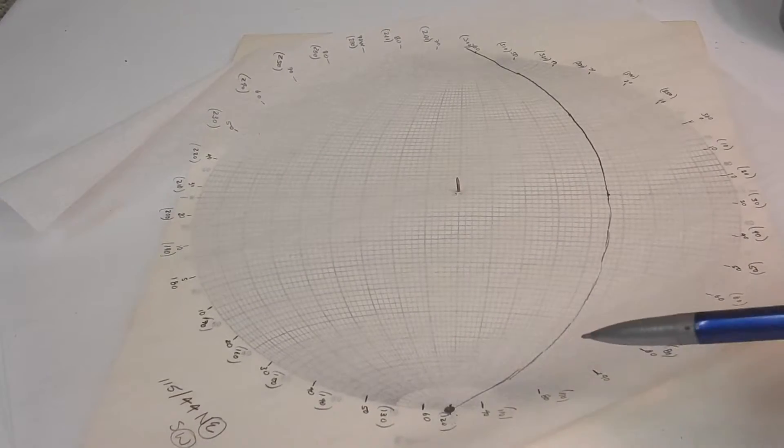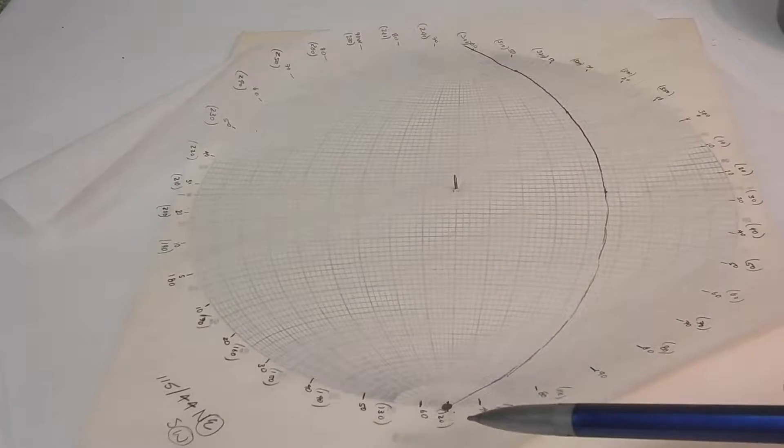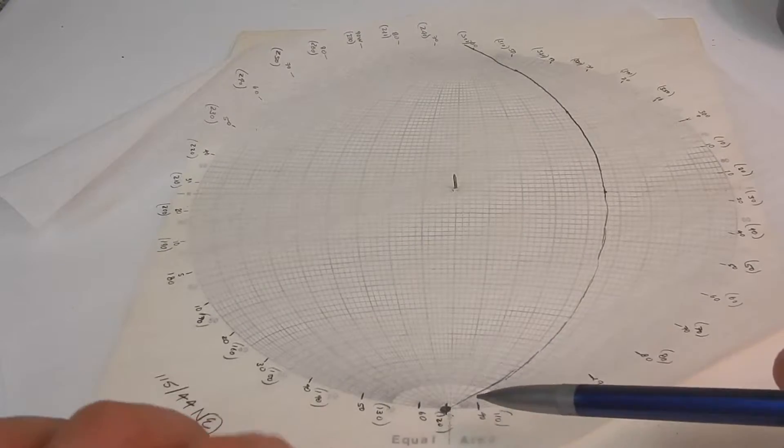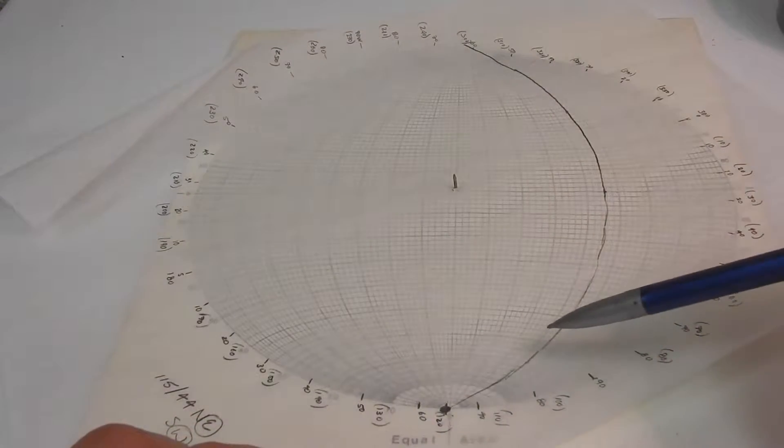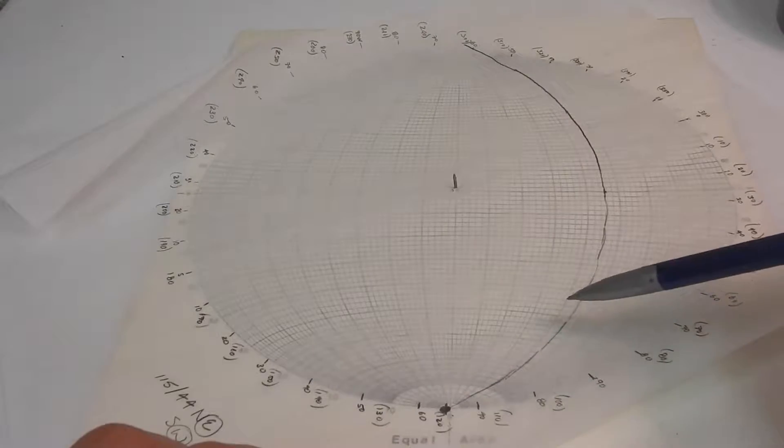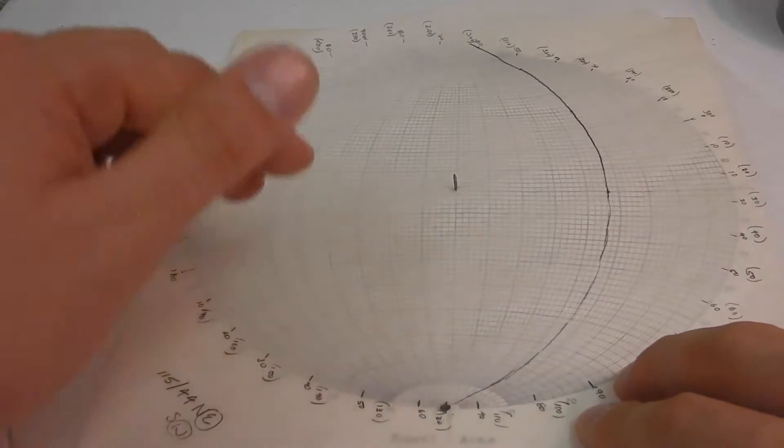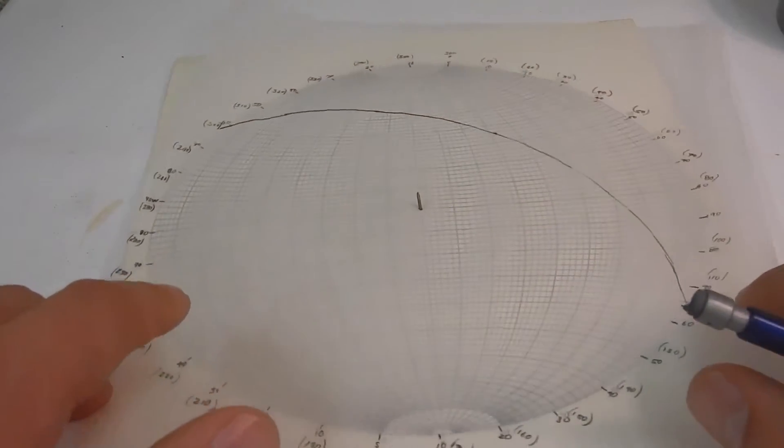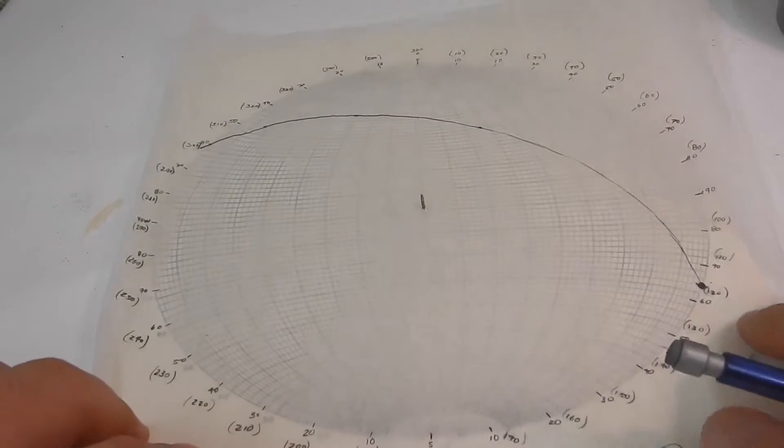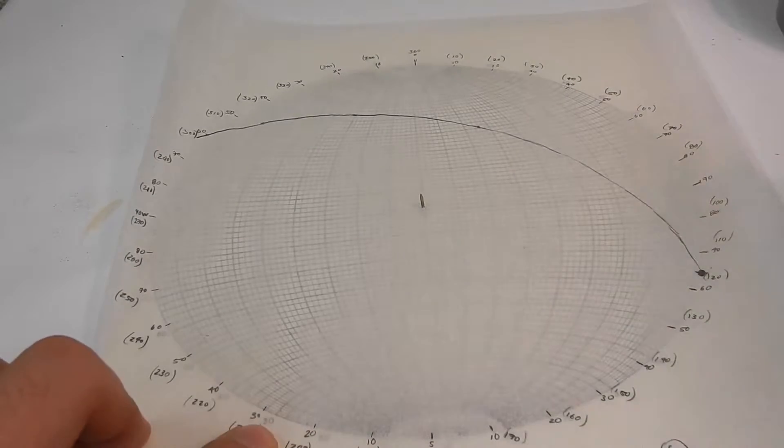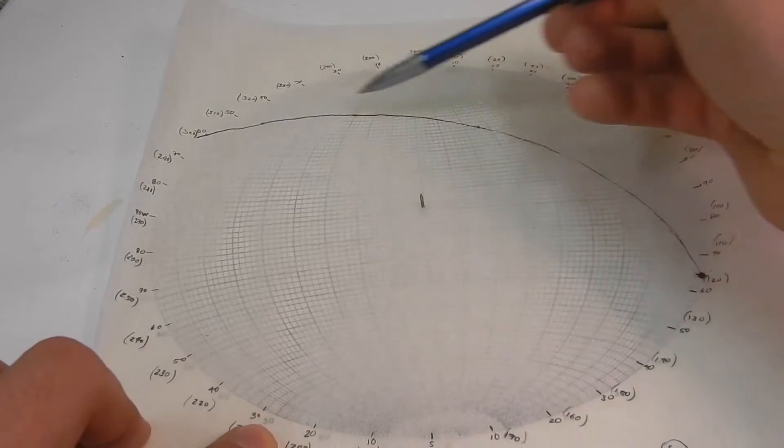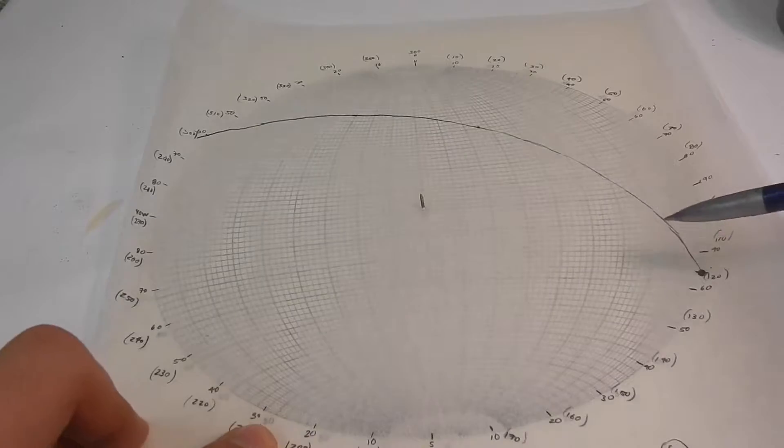This is what we just traced out along the great circle. Our strike is still at the south here. Our great circle drawing went up and through our dip measurement. Now we can rotate our stereonet back to north, where the north lines up with north behind it, and you'll see we now have a line going across our stereonet.